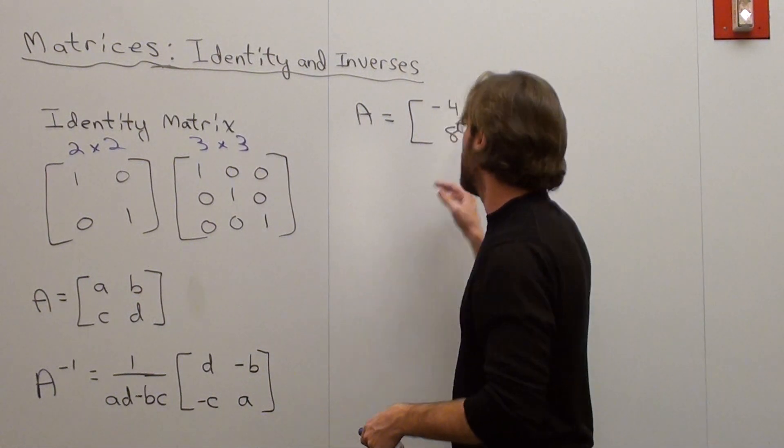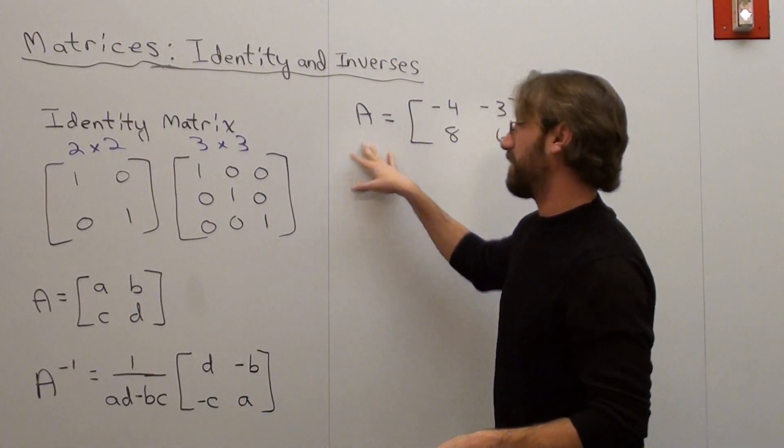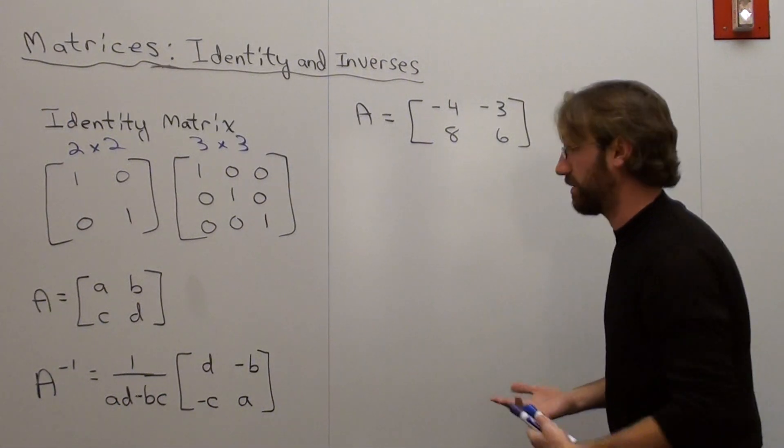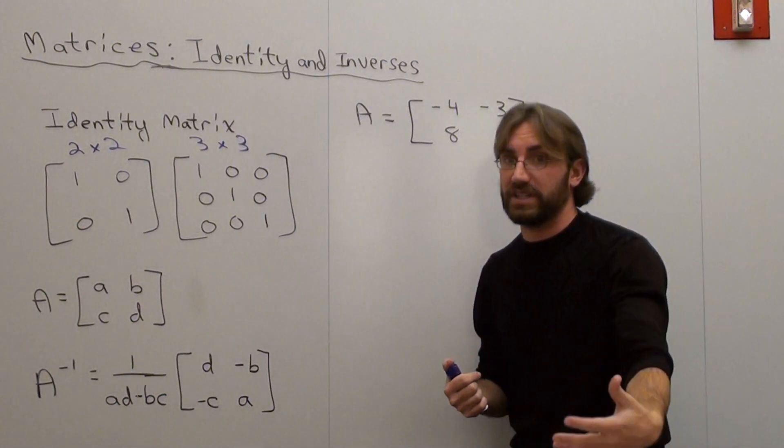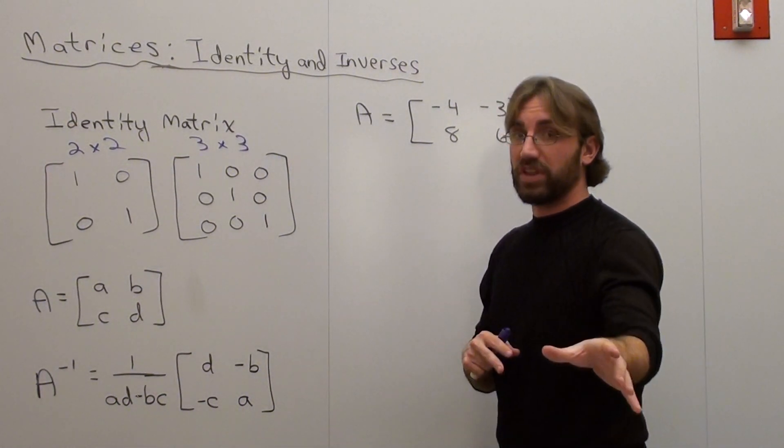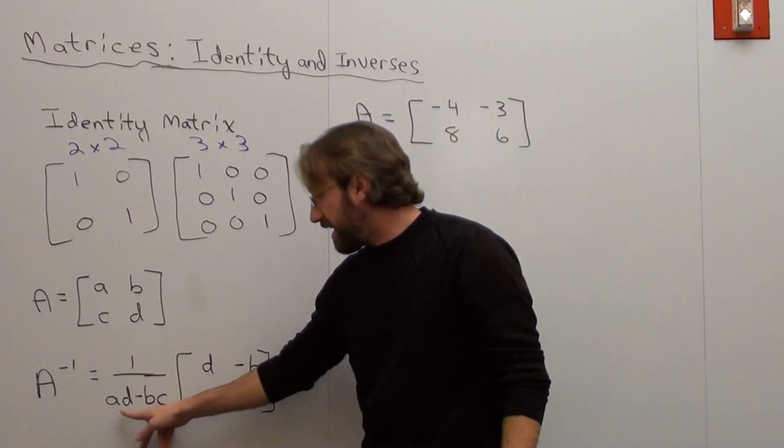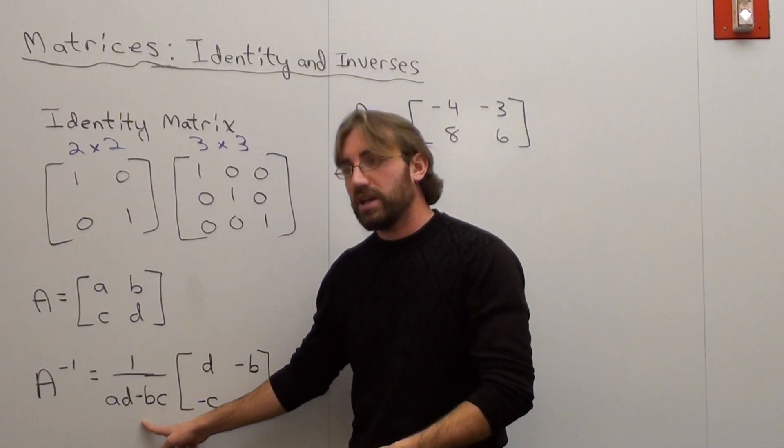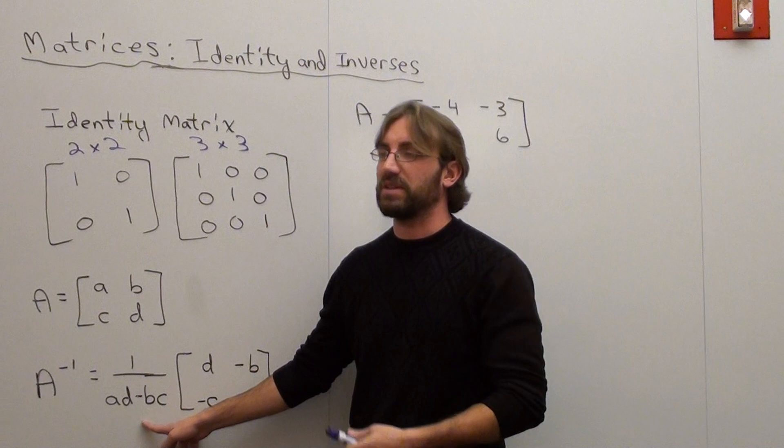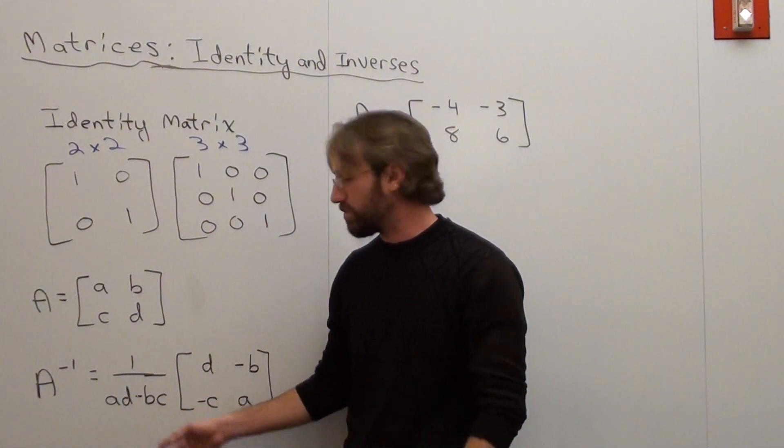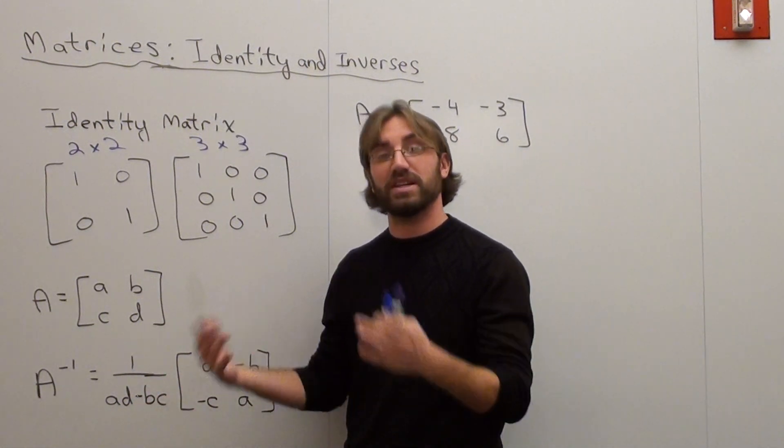So basically what I want to do is I want to figure out the inverse of this matrix. That's my problem that I'm presenting right now. We're going to see if one exists as well. There is one thing I have to preface. If AD minus BC is zero, that means that there's no determinant.